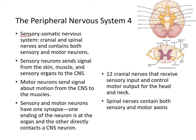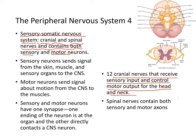The peripheral nervous system also includes the sensory somatic nervous system with cranial and spinal nerves, both possessing sensory as well as motor neurons. Cranial nerves receive sensory input and control motor output for the head and neck. Sensory neurons send signals from skin, muscle, and organs to the CNS. Motor neurons send signals about motion from the CNS to the muscles.